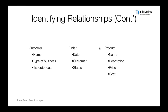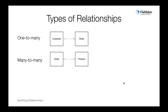For example, there's a relationship between order and product — an order can have many products and a product can be on many orders. That's a many-to-many relationship, and it's valid. No matter what, you need to think about all your entities and how they relate together. There are two main types of relationships: one-to-many, which we have with customer to order, and many-to-many, which we have with order to product. There's also a one-to-one that's less common.